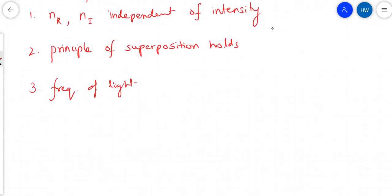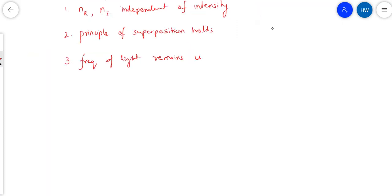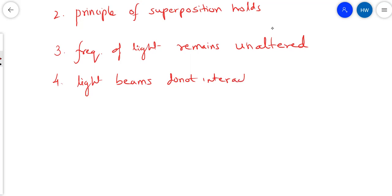The second aspect is, of course, because we are in linear regime, the principle of superposition holds. The third point is that the frequency of light remains unaltered. And the fourth important issue is that different light beams do not interact. This, as you can see, is common experience. Let's say you put in a red light and a yellow light within any linear medium, they will just pass right by without affecting each other.